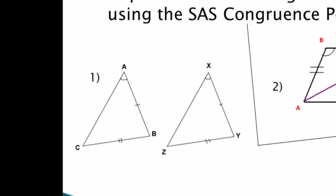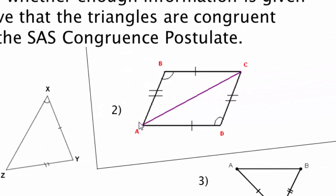Number two. Looking at triangle ABC and triangle CDA, I think I could get these two triangles to match up because I have a Side, Angle, Side. And if I look here, Side, Angle, Side. So triangle ABC and triangle CDA will be congruent because of Side, Angle, Side. Yes.